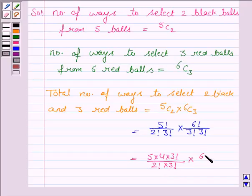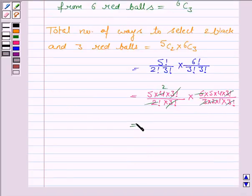6 factorial can be written as 6 into 5 into 4 upon 3 into 2 into 1 into 3 factorial. 3 factorial gets cancelled with 3 factorial and 2 into 2 is 4, and this is equal to 200.